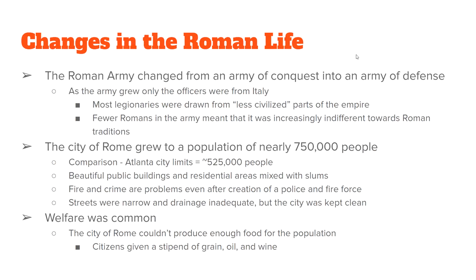What really changed in the life of Roman people during the Empire versus the Republic? Not a whole lot changed, but there are a few things. The Roman army was no longer an army of conquest — it was purely an army of defense. By the time of the later Roman Empire, only the officers were actually Roman; pretty much everybody else was what would be called a barbarian, without much loyalty to Rome. Rome itself was very large — about 750,000 people — compared to Atlanta today which has fewer than 500,000.